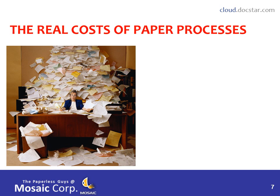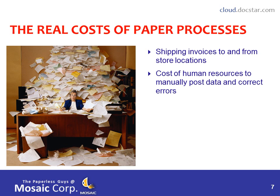Of course, the real costs of your current paper-based processes are: number one, the shipping cost of getting invoices from the stores to the main office — you're paying FedEx, UPS, or USPS bills. Second is the cost of having someone in your AP department manually post these invoices to your accounting system and then later have to correct errors.